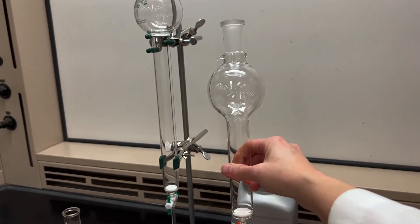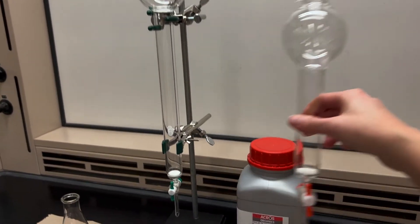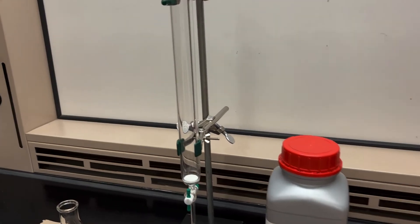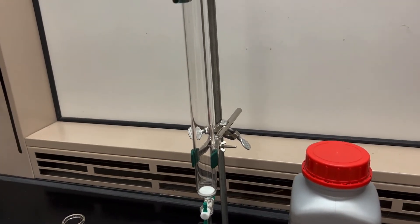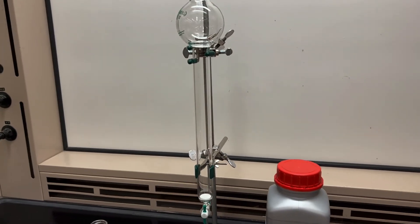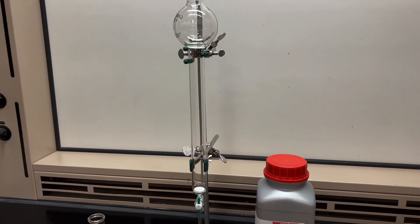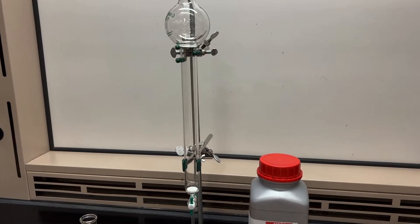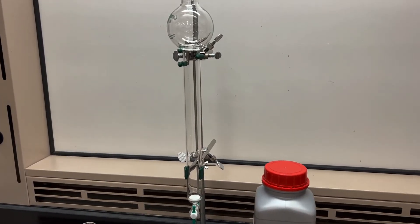There are lots of different kinds of columns. They can be different heights, different widths. You might have to put a piece of cotton in the bottom of the column. The ones that I have actually have a glass frit so we don't need to do that. But whichever one you have, the first thing to do is to clamp your column to a ring stand and bring that to the fume hood.